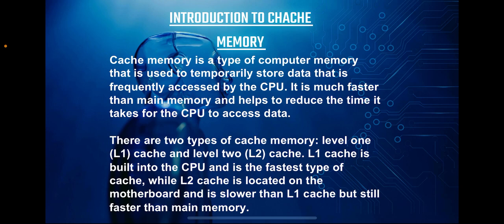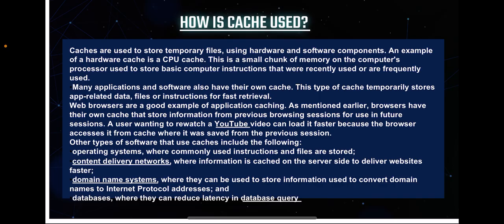I'm Dhanashree Rajput from Group E5 and I'll be continuing with how cache memory is used. Caches are utilized to store temporary files using both hardware and software components. A hardware cache, such as a CPU cache, is a small portion of memory embedded within the computer's processor. Its purpose is to store frequently accessed or recently used computer instructions. Similarly, many applications and software have their own caches, which serve as temporary storage for application-specific data, files, or instructions, allowing for quicker retrieval when needed.